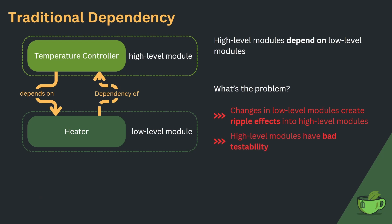Besides the upward ripple effects of changes, traditional dependency also leads to bad testability of high-level modules. In order to test a high-level module, all its dependencies need to be present and working. As soon as a dependency breaks, the tests for the high-level module also break. On top of that, the dependencies might be expensive to set up — like accessing a database — which increases runtime and the time it takes to develop tests. Testing edge cases like recovering from a failed database access are also hard to test.